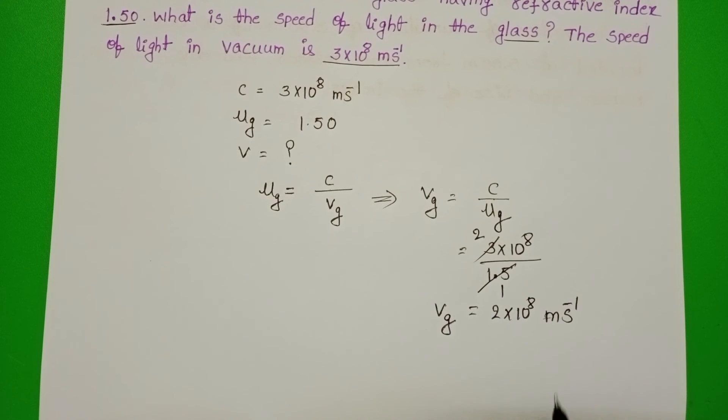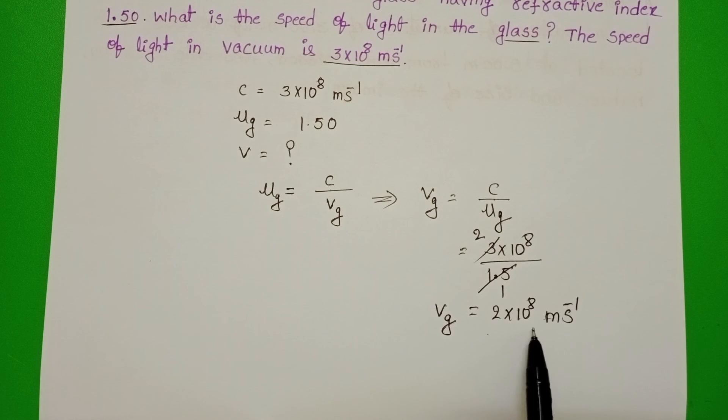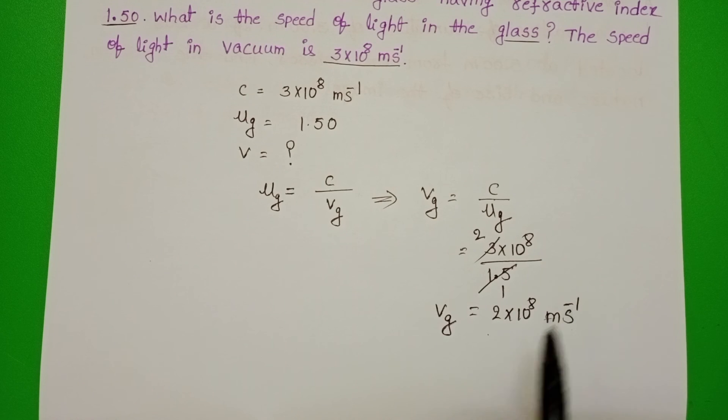Speed of light in glass is equals to 2 into 10 power 8 meter per second.